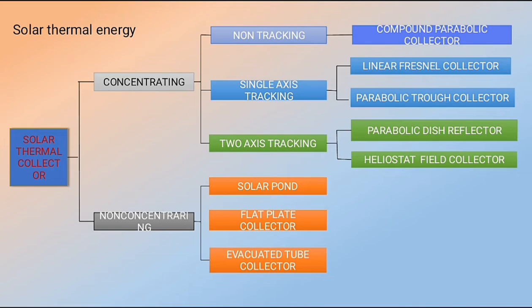In non-concentrating solar thermal, solar radiation is parallel to a flat plate collector which absorbs the heat. This category is further divided into three types: solar pond, flat plate collector, and evacuated tube collector.